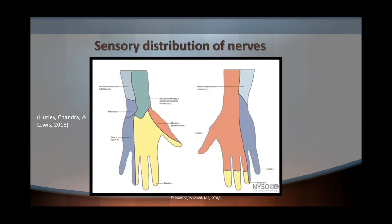In this slide, we're going to be talking about the sensory distribution of nerves. As you can see, this is where all the sensory receptors for each of these nerves are located. In the dorsal view, or the back view of the hand, you can see mostly the radial nerve, as well as the ulnar nerve innervating the little finger and your ring finger. And in the volar view, meaning the front of the hand, you can see where your median and ulnar nerves are.